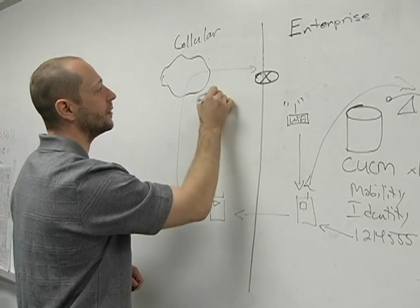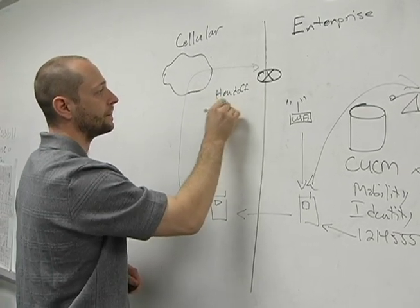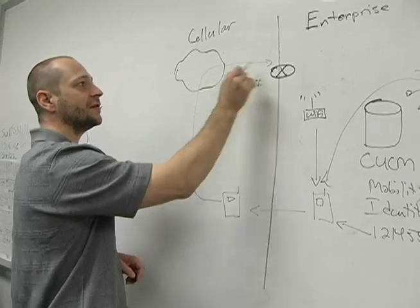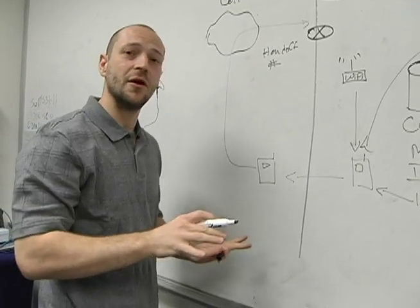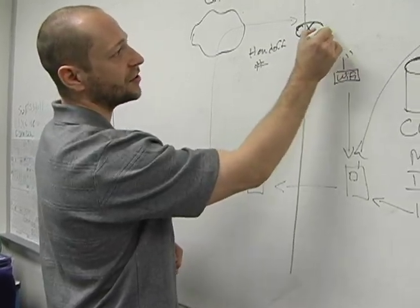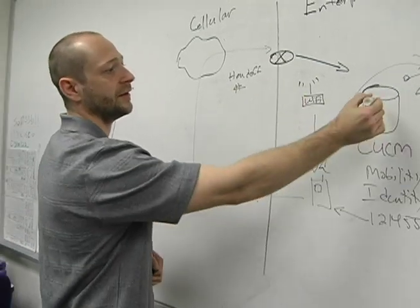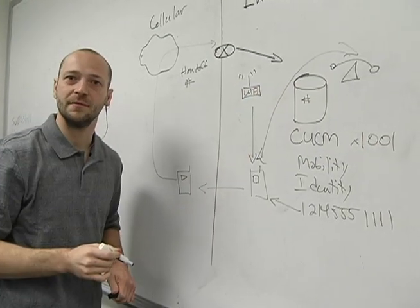It's going to call a phone number called the handoff number. It dials this phone number in the background. The user doesn't know this is happening. Signal strength is going down. This comes inside Call Manager and lands at this handoff number, which is configured inside Call Manager.